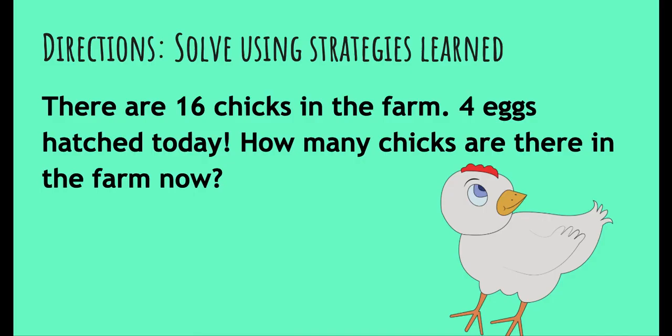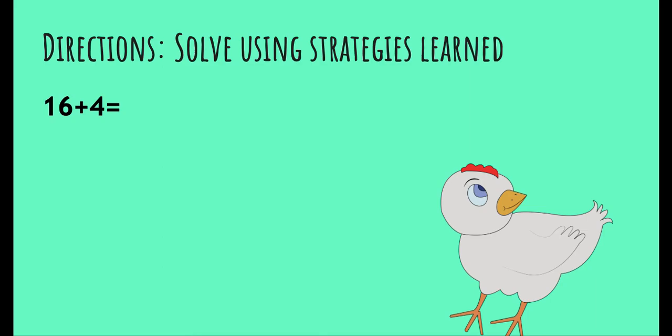Let's try this one. There are 16 chicks on the farm. Four eggs hatched today. How many chicks are there on the farm now? So there are 16 chicks and four more hatched — we know chicks hatch from eggs — so 16 plus 4. Go ahead and write it down. I'll suggest counting on: start with 16, count four more. The answer is 20.